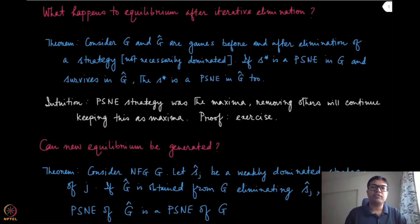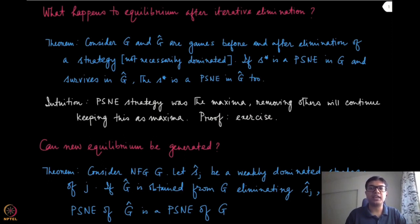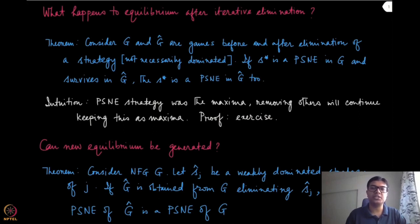We have seen the effect of iterative elimination of dominated strategies with the maxmin strategy, and we have seen that for the player whose strategy has been eliminated, that agent does not have any effect on the maxmin value for other players — the maximum value might change. Now in this module we are going to ask a very similar question but for pure strategy Nash equilibrium.